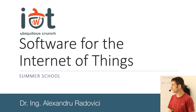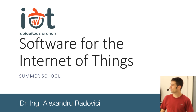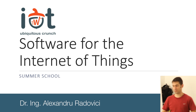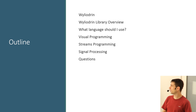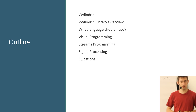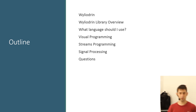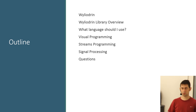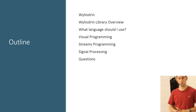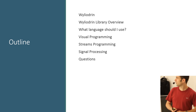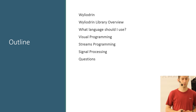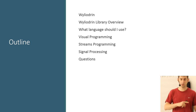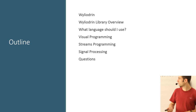Today we're going to talk about software for the Internet of Things, particularly the Yludrin platform. This is the outline for today: a few words about Yludrin and its library, a discussion about programming languages for the Internet of Things, a few words about visual programming, streams programming, signal processing, and then questions.